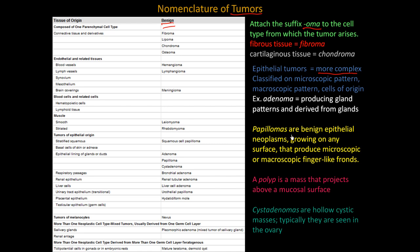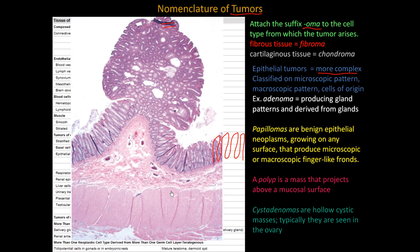Papillomas are benign epithelial neoplasms growing on any surface that produce microscopic or macroscopic finger-like fronds. So if they produce some kind of finger-like projections, they're a papilloma. A polyp is a mass that projects above a mucosal surface. This is a polyp inside someone's colon — you can see this usually benign polyp projecting up into the colon, into the lumen.